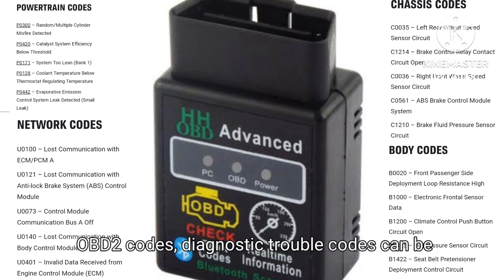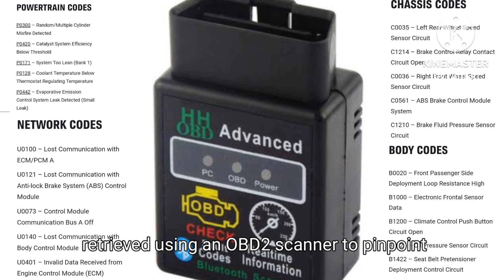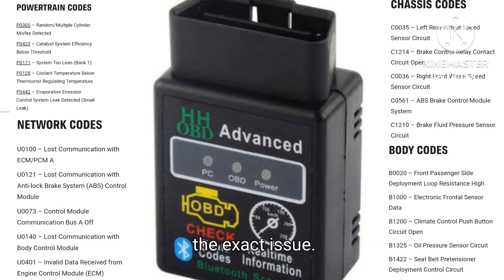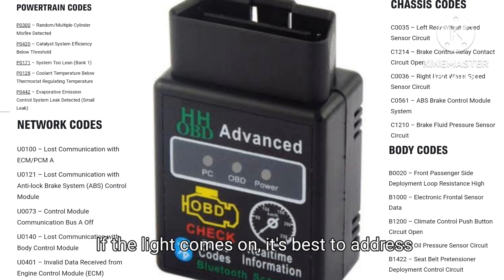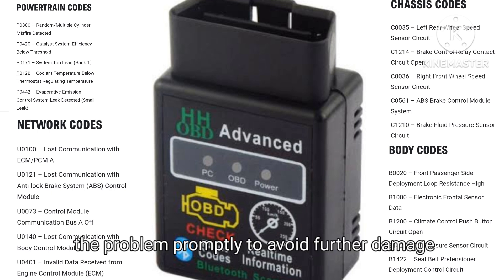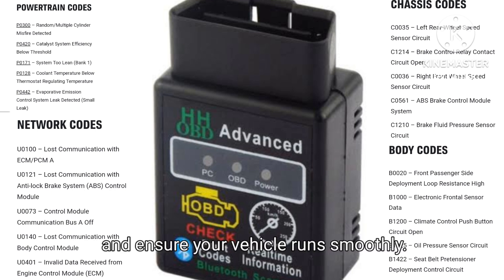OBD2 codes. Diagnostic trouble codes can be retrieved using an OBD2 scanner to pinpoint the exact issue. If the light comes on, it's best to address the problem promptly to avoid further damage and ensure your vehicle runs smoothly.